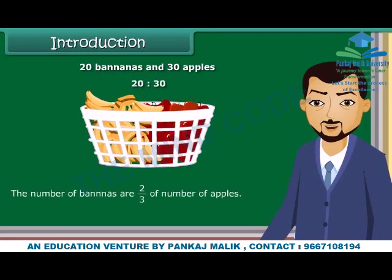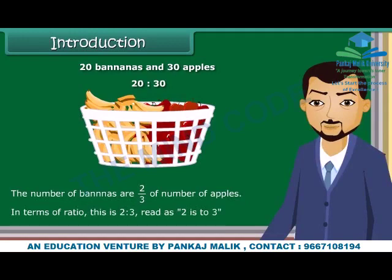The number of bananas are 2 upon 3 of the number of apples. In terms of ratio, this is 2 is to 3, read as 2 is to 3.